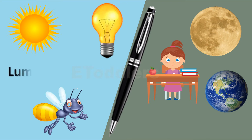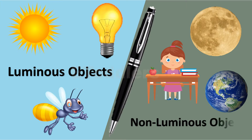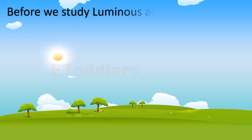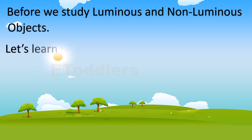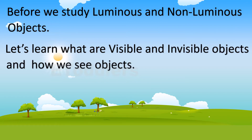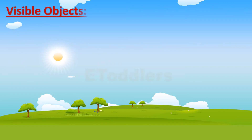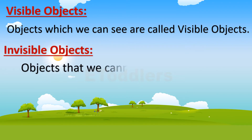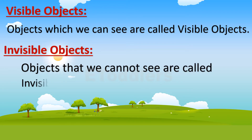Let's learn about luminous and non-luminous objects. Before we study them, let's learn what visible and invisible objects are. Visible objects are objects which we can see. Invisible objects are objects that we cannot see.